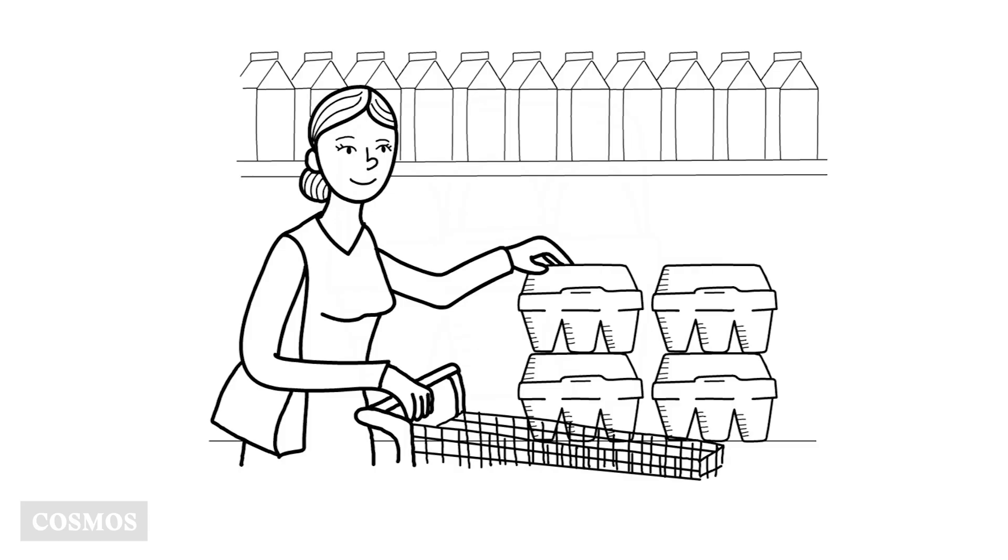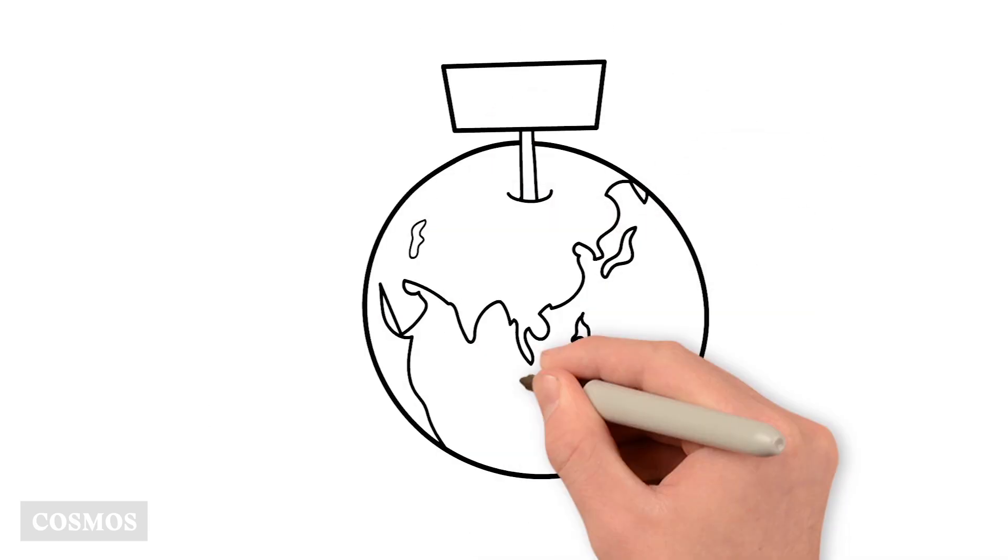When you run out of eggs, you just go to the shop and buy more to replace them. But how do you know the world won't run out of eggs?